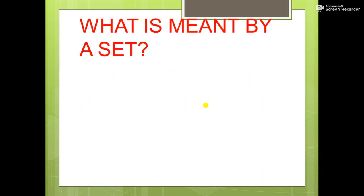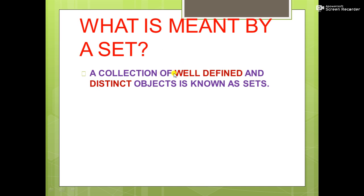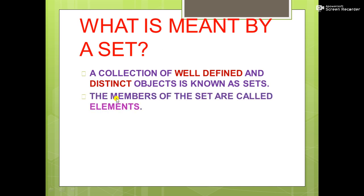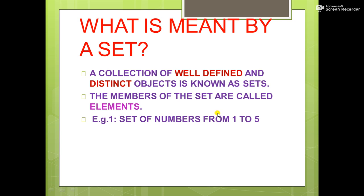First, let us discuss what is meant by a set. A collection of well-defined and distinct objects is known as a set. The members of the set are called elements. For example, the set of numbers from 1 to 5 — can we consider it as a set? Yes, we can, because numbers from 1 to 5 are well-defined and distinct, different from other numbers. So we can consider it as a set.